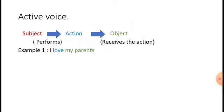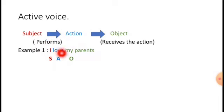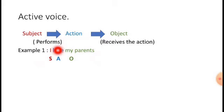For example: 'I love my parents.' Here, 'I' is doing the action. 'Love' is the verb — the action. So 'I' is the subject. 'My parents' are receiving that love, so they are the object. 'I love my parents' is an example of active voice. 'I' is the subject, 'love' is the action, and 'my parents' is the object.